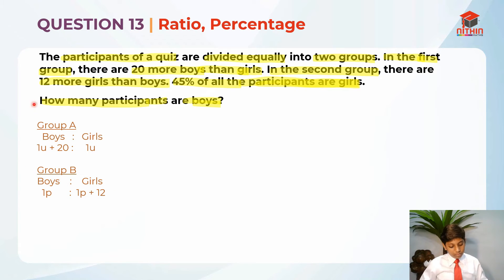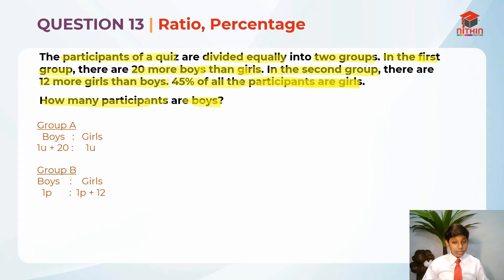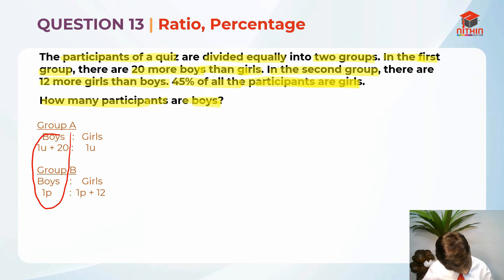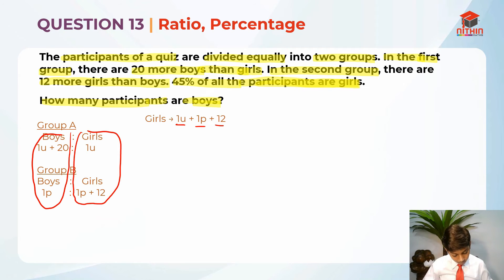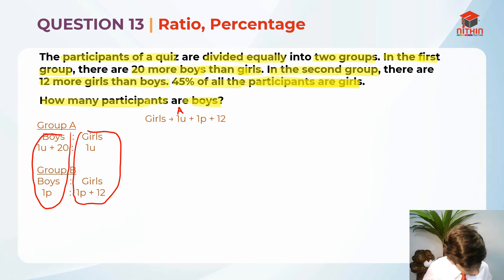This is how I separate them. They are asking how many participants are boys, so boys are this whole column here and girls are this whole column here. What we must do is add them up. I'm going to add the boys column first, then add all the girls. The girls total is 1u plus 1 part plus 12. This is group A and this is group B.